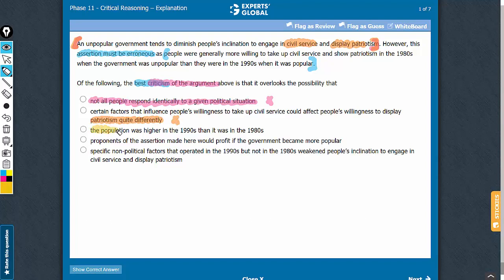Answer choice C compares the population in the 1990s versus the population in the 1980s. See, the argument is about people being generally more or less willing to take up civil services. So it's about the tendency of the overall population.